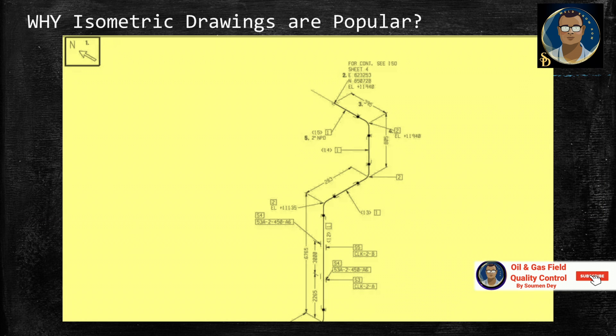Piping isometric drawings are popular because of their simplicity, yet efficient in conveying complex information. The following figure gives an example of how isometric drawing can be represented in three orthographic drawings. That is just a simple piping drawing.